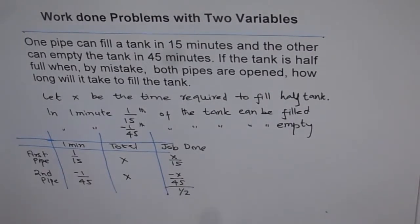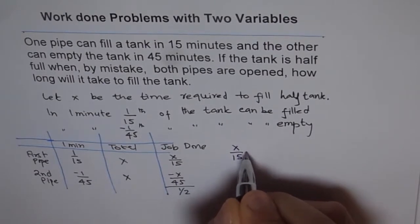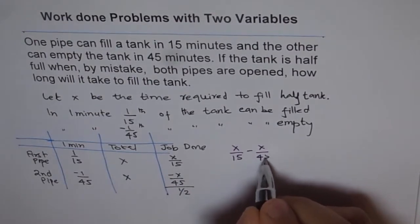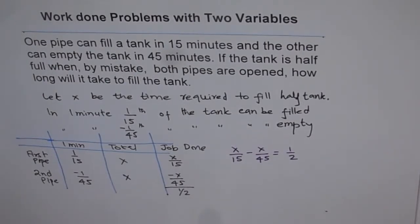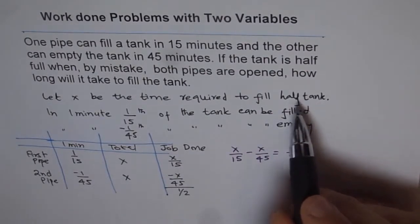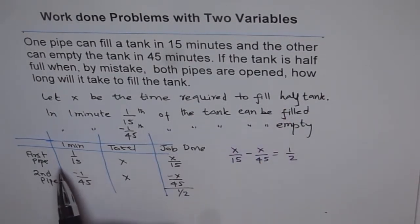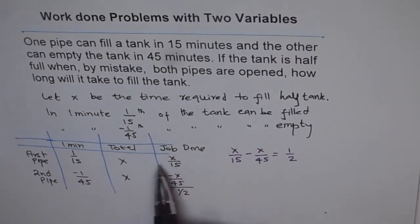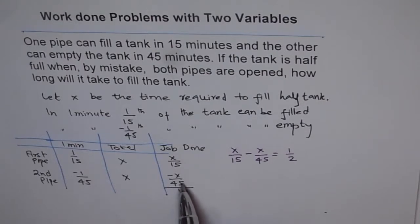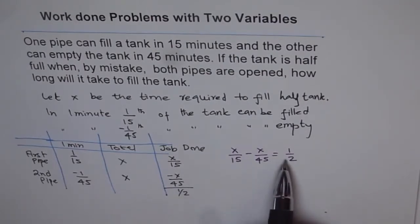That gives us our equation. We add the two contributions: x/15 minus x/45 equals one half. The first pipe fills x/15 of the tank in x minutes since it does 1/15 per minute. The other pipe has drained x/45 of the tank. So the equation is x/15 minus x/45 equals 1/2, and now we can solve this.